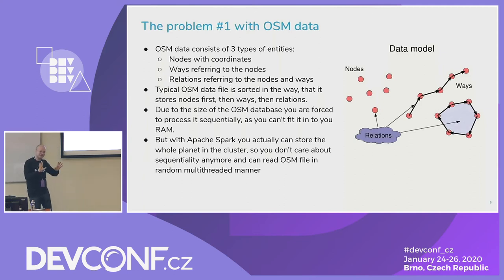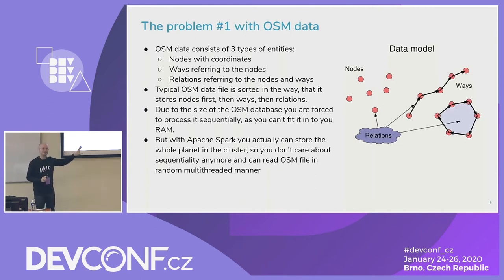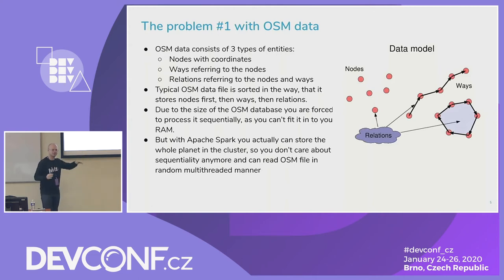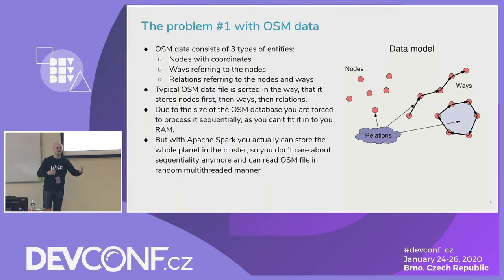And then there's the relation. A relation is a collection of ways, nodes, and other relations. Relations use identifiers to refer to other objects. We use relations for everything else — polygons, multipoints, multipolygons. If you can't make it a node or a way, make it a relation. But to reconstruct its geometry, you have to go back to other relations, back to other ways, back to the nodes — and finally you can reconstruct your geometry.